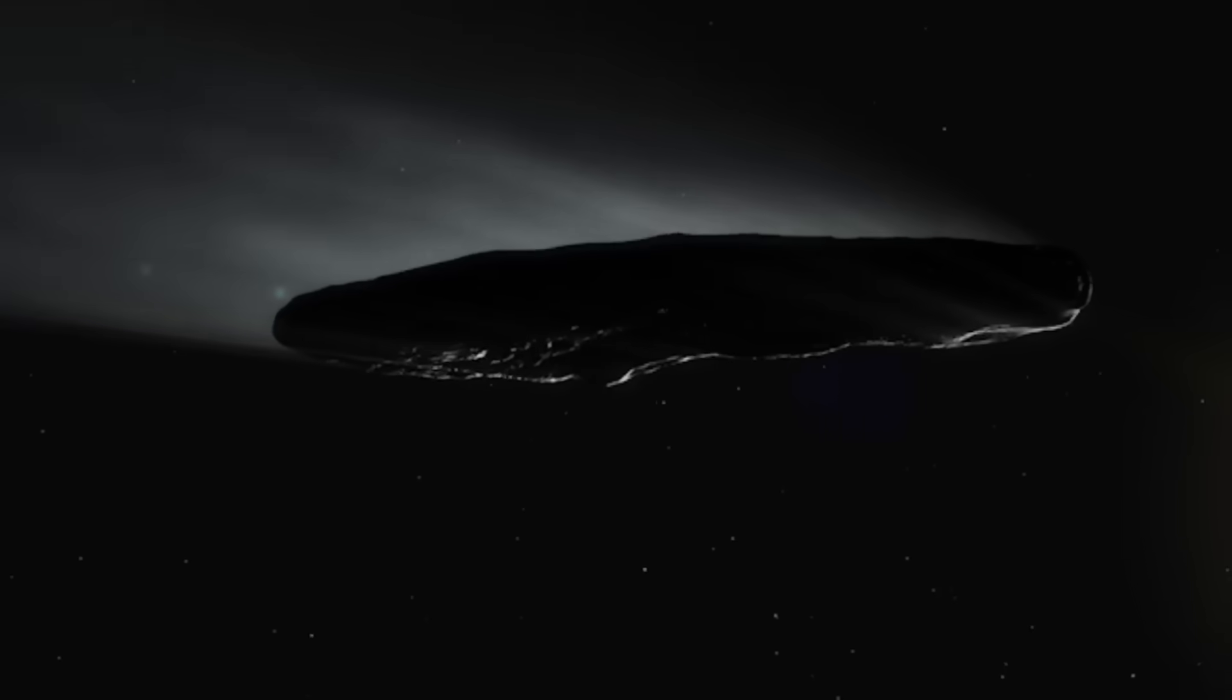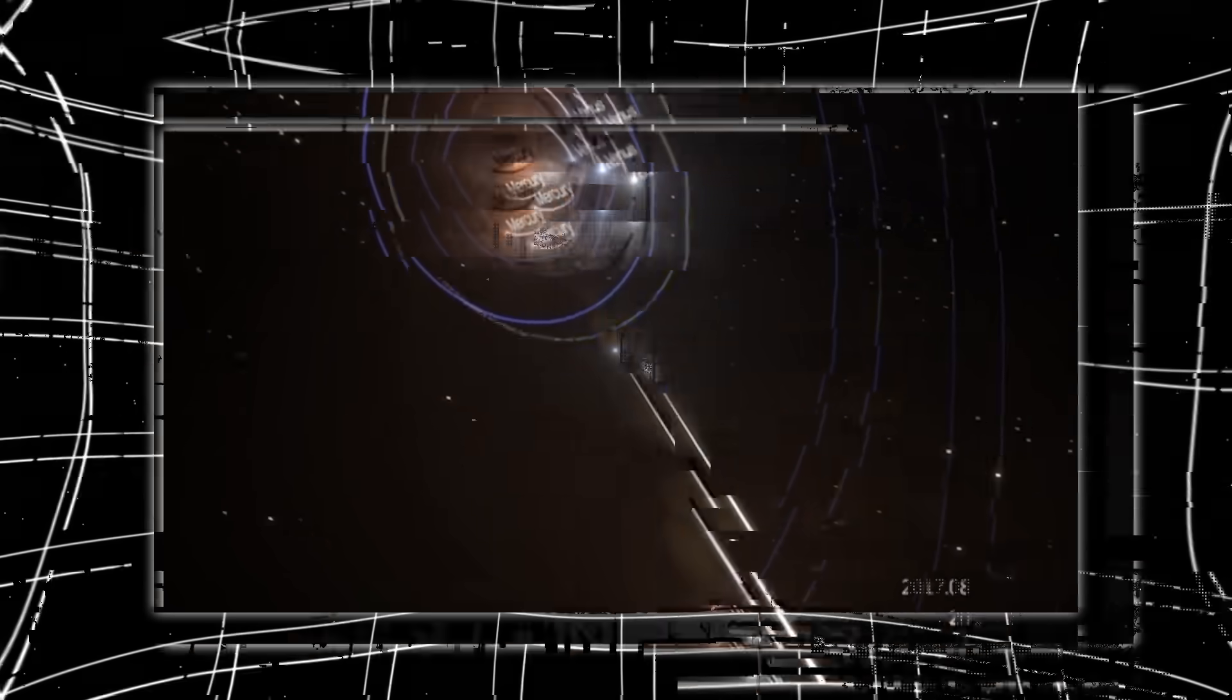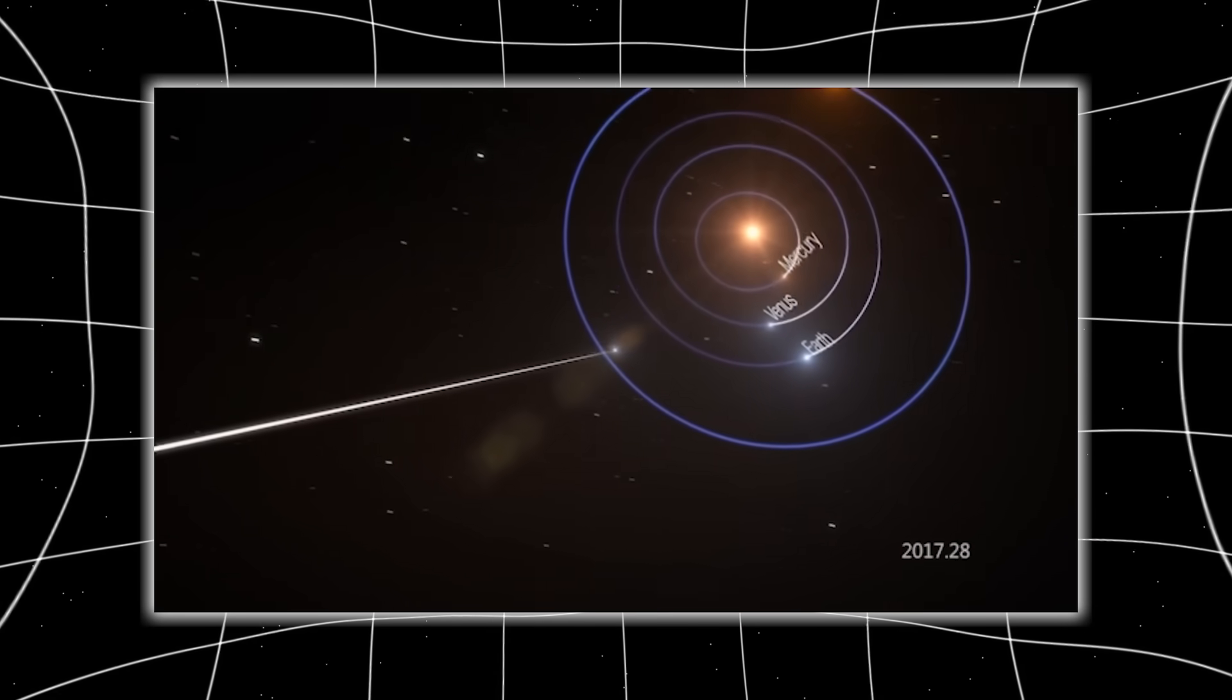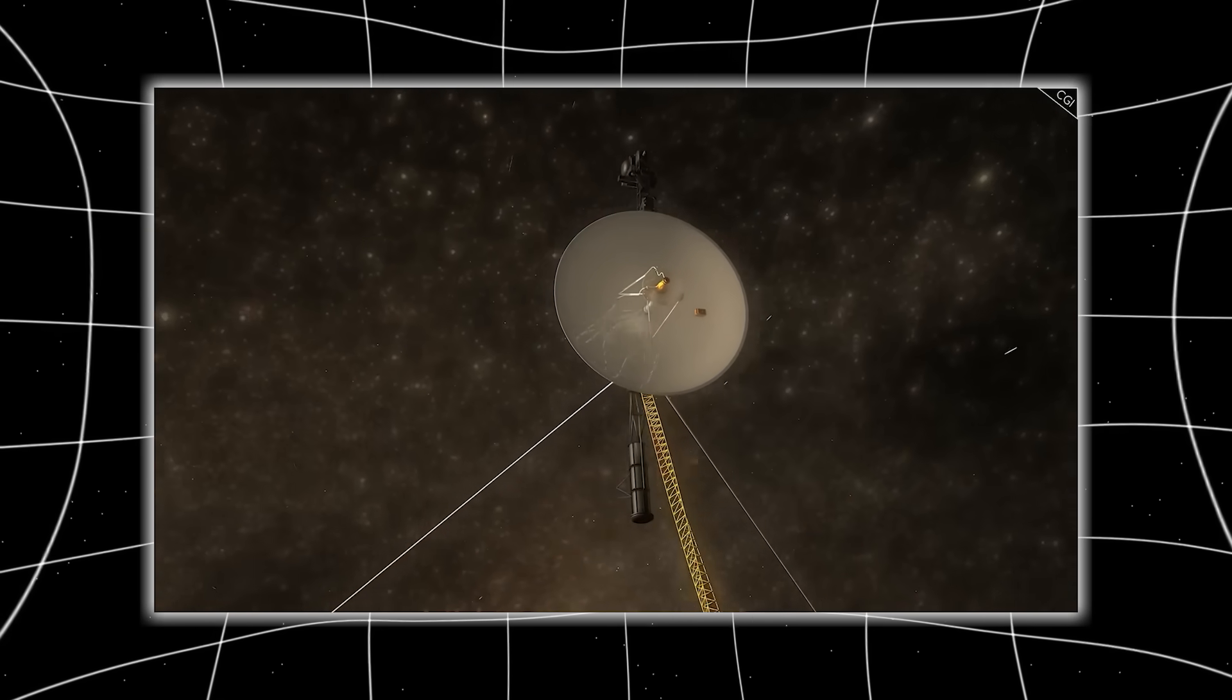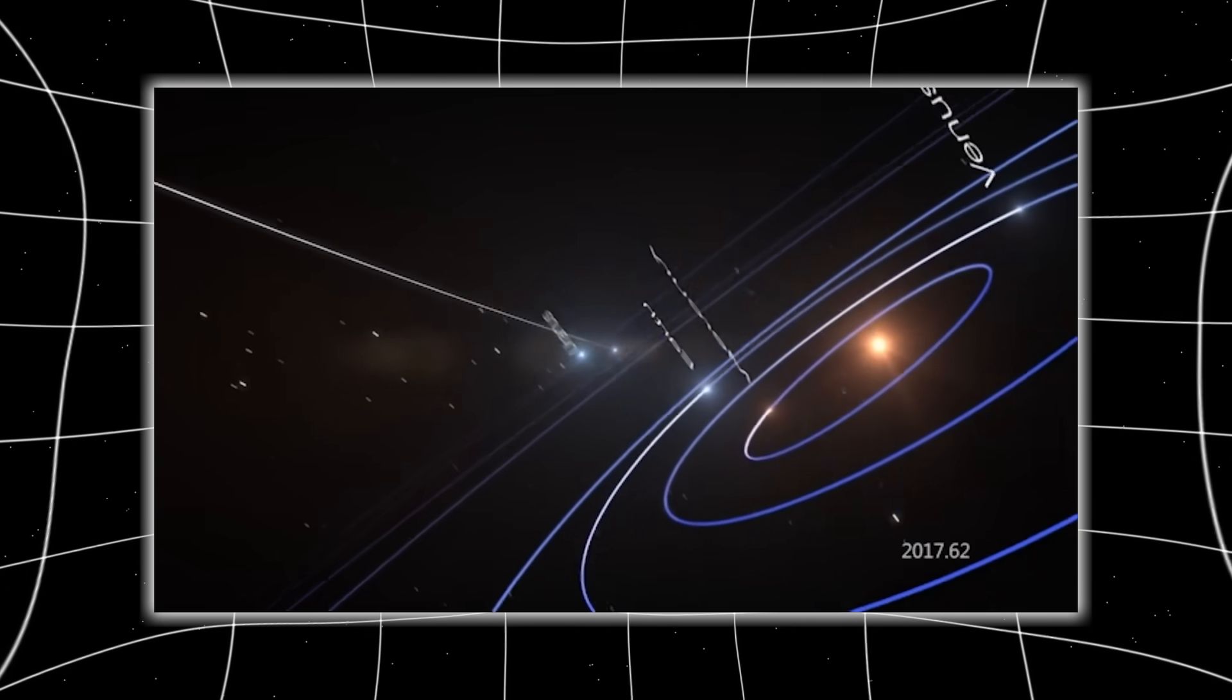What's even stranger is that this realignment pointed not at 3i Atlas's last known position, but toward its projected future path, weeks ahead. It was as if Voyager was predicting where Atlas would go next, like a chess player anticipating a move before it happens.